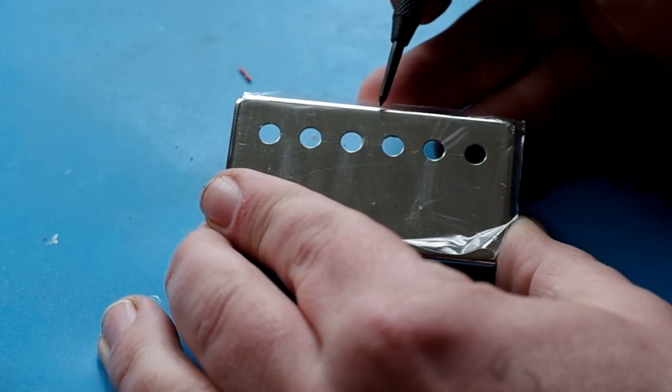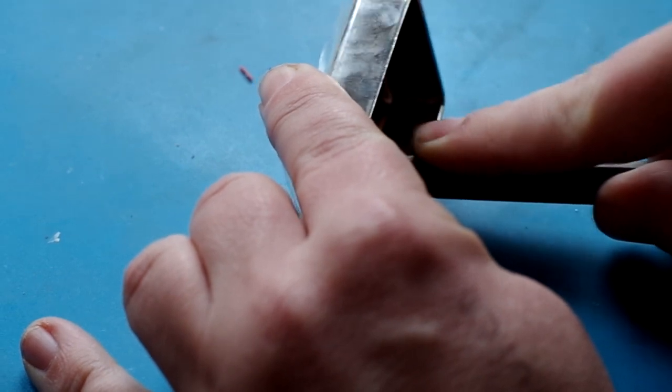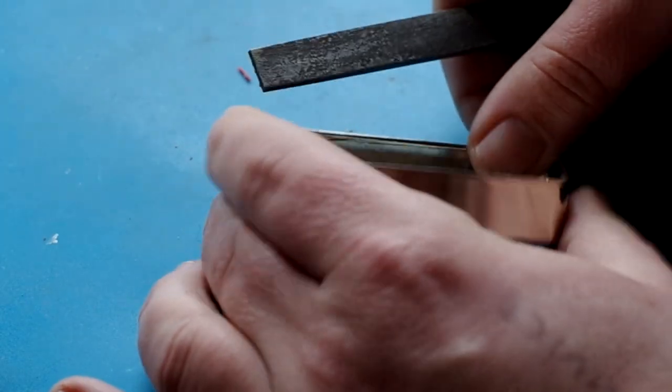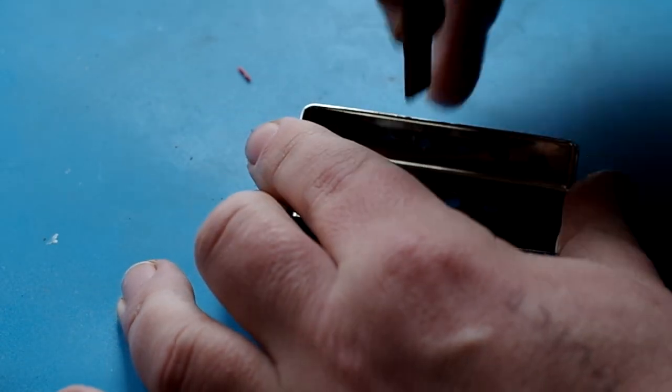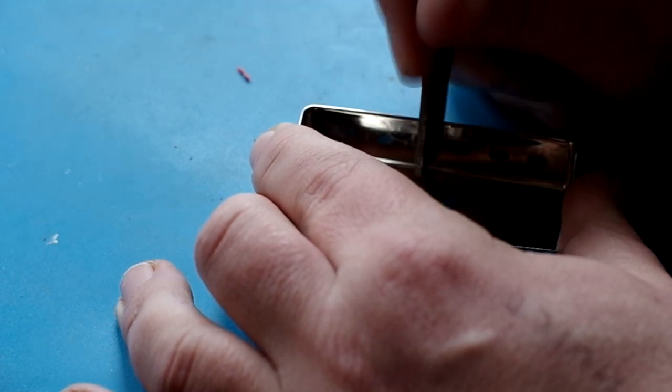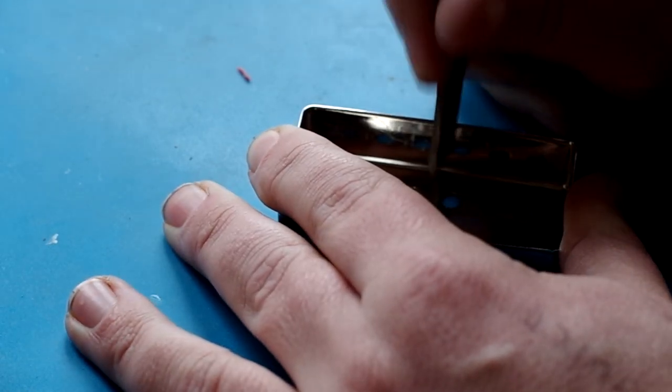So halfway in between those two pole pieces we're going to file at the top of the cover, we're going to file in between those two areas and just score away because this will enable the solder to take. If you don't do this it becomes almost impossible because solder just doesn't want to take to a bare area.